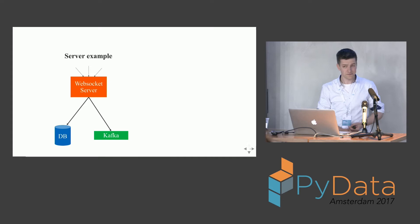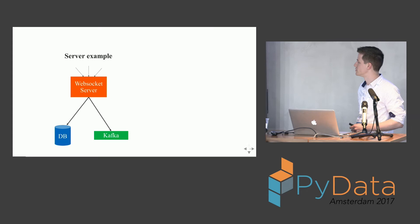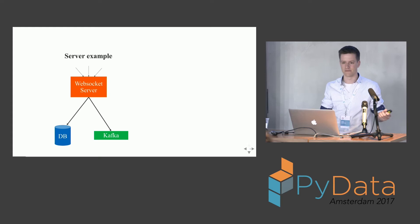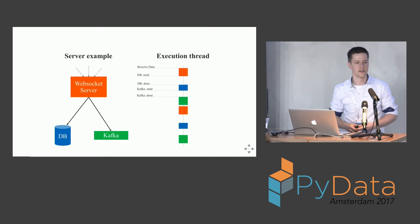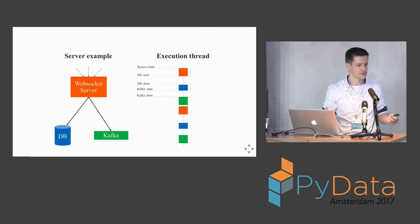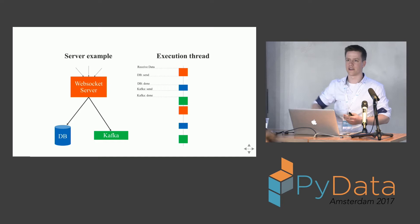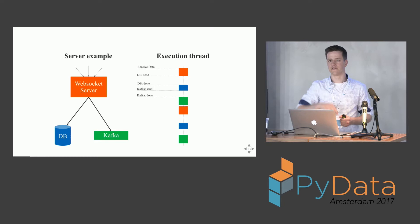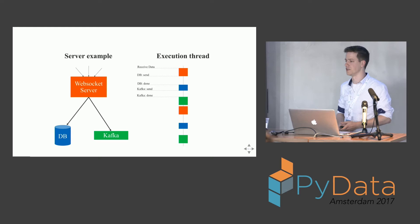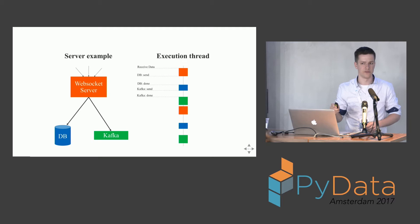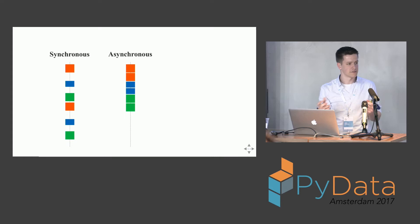Why did we start looking into AsyncIO? We had a small WebSocket server receiving data from multiple clients, writing that to a database and to Kafka. Initially we wrote this synchronously. You first receive your data, parse it, then start writing to a database — there's a gap representing the wait time for that IO. After the database is done, you send to Kafka and wait again. If you get a lot of messages in real time, you can see there are gaps that asynchronous code can improve upon.